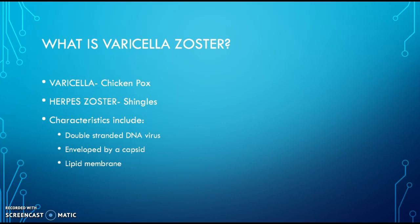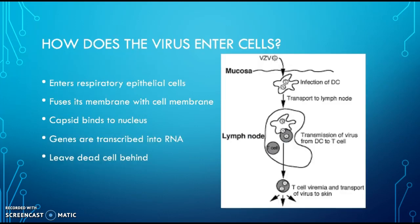This virus is very interesting in how it replicates and how it infects our body. First, it starts off by entering the respiratory epithelial cells, and once it infects these cells, it can infect all types. It gets into the cell by fusing its own membrane with the cell membrane, and once it fuses together, it's going to release its capsid into the cell.